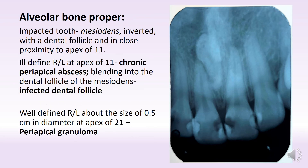The alveolar bone proper — what do we see? First of all, it is important to note that the mesiodents, which is inverted, is inside the bone. So this is an unerupted or impacted tooth.